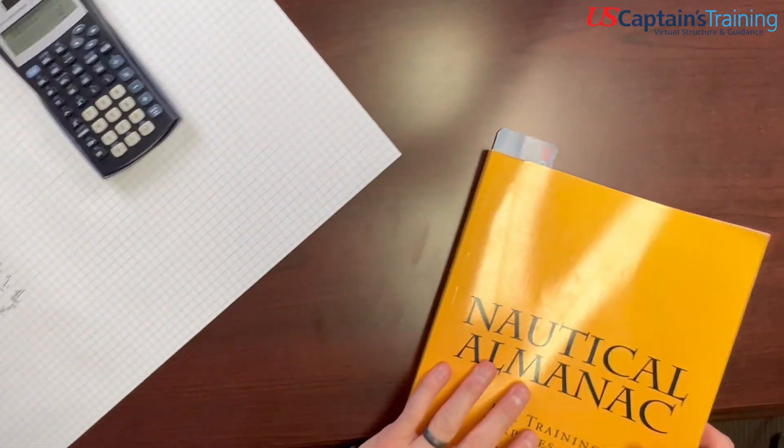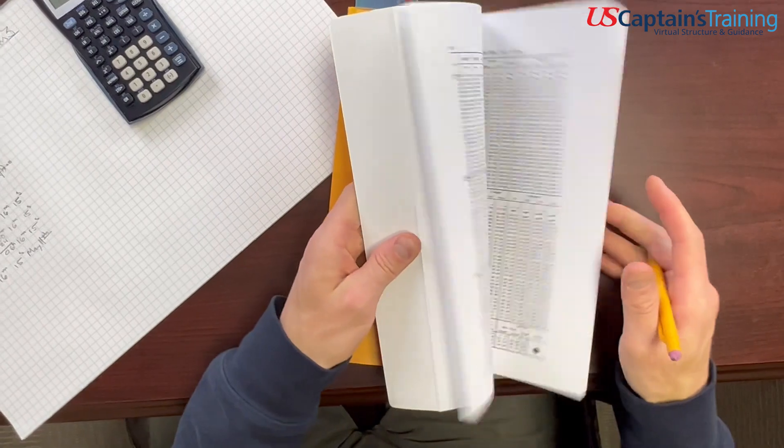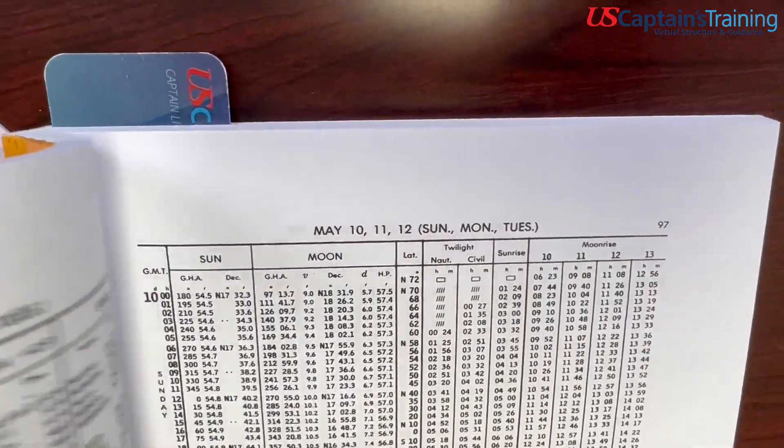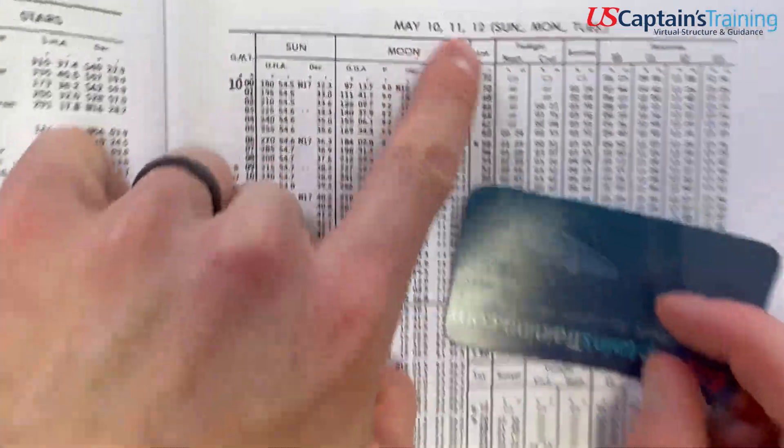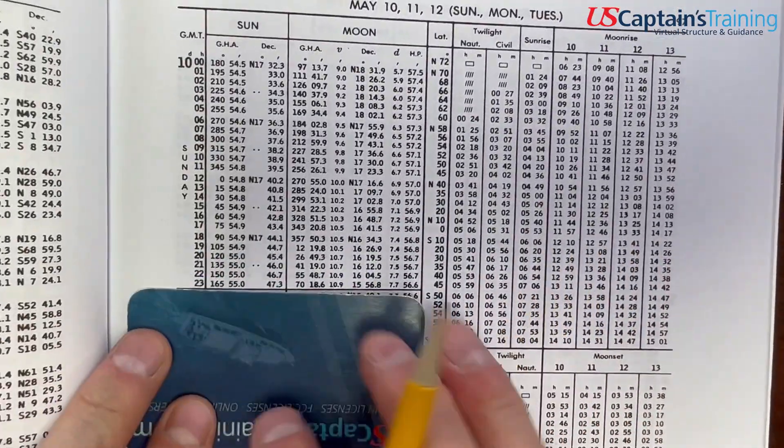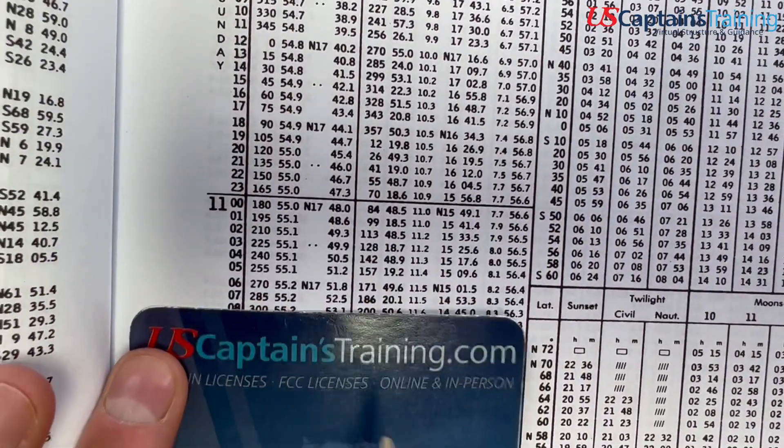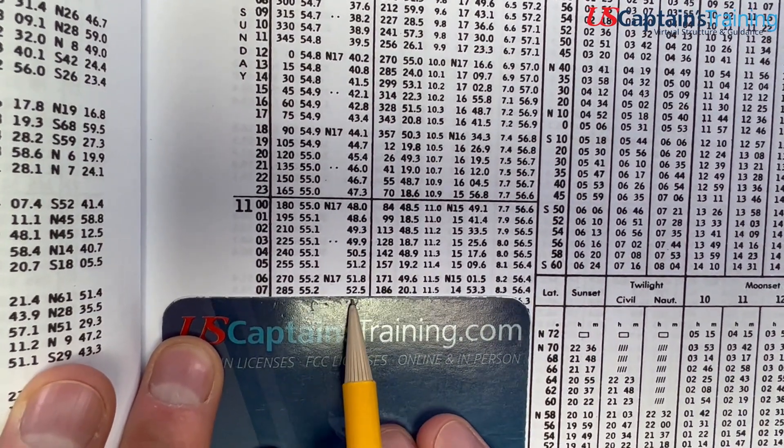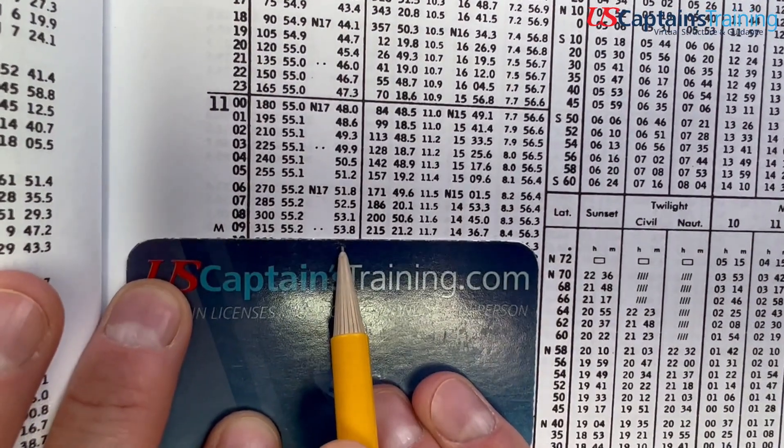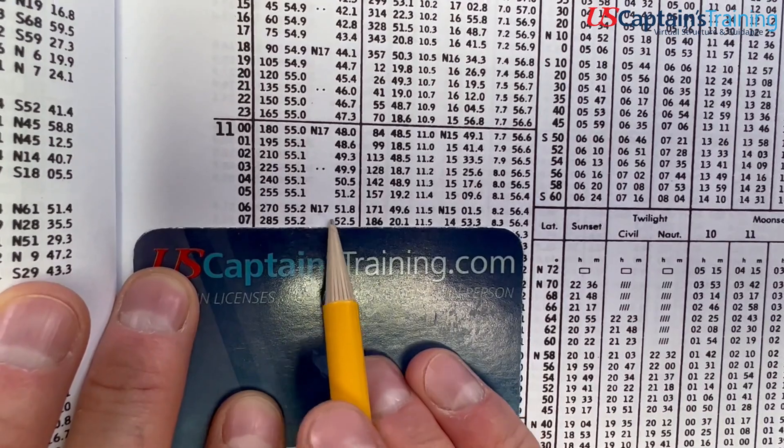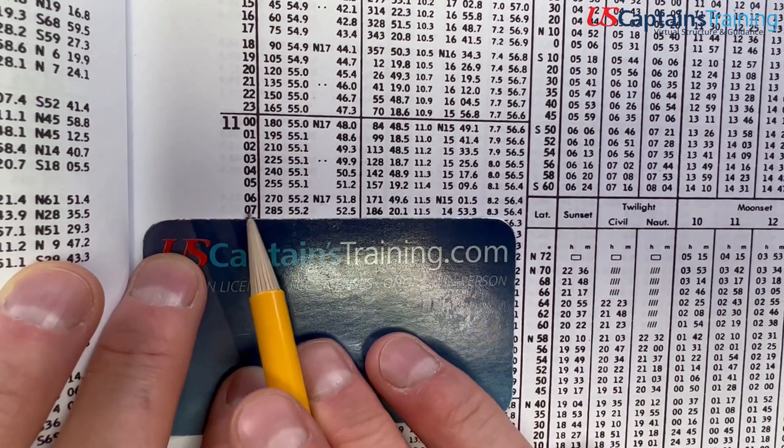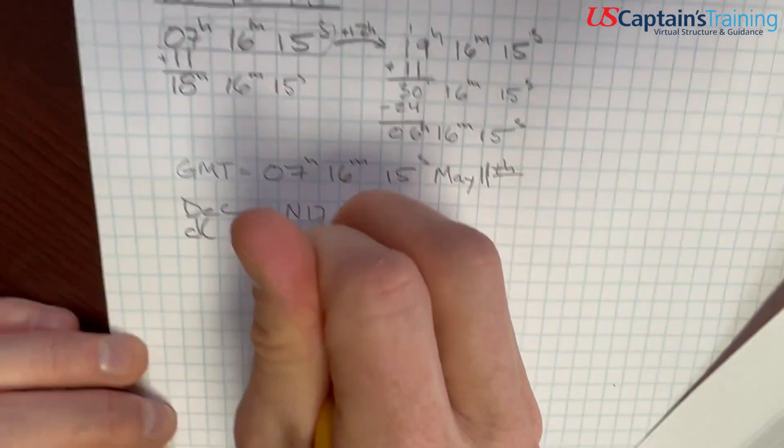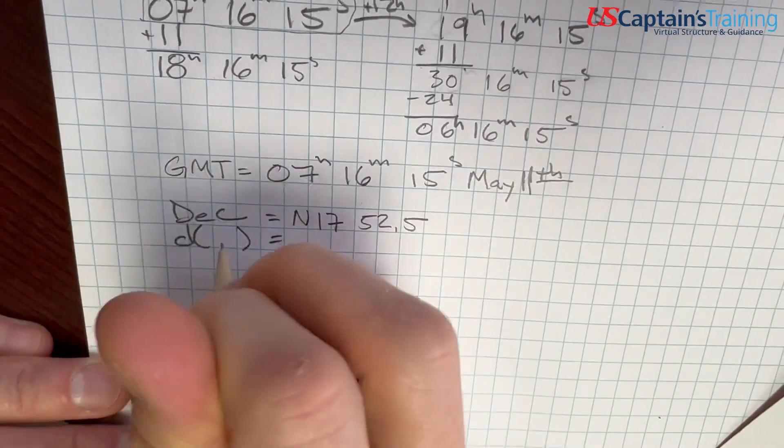Now we can jump into the Nautical Almanac and find our declination and our D value. So we're May 11th, 7 hours. May 11th, 7 hours. Declination is north 17 degrees 52.5 minutes, getting bigger. North 17, 52.5, getting bigger.